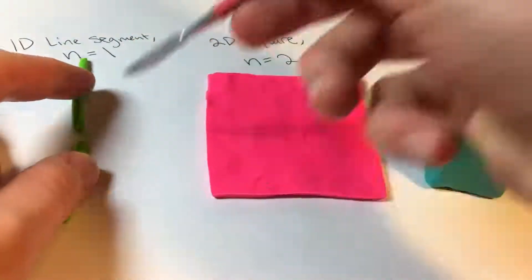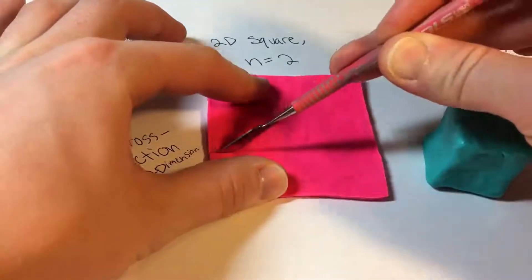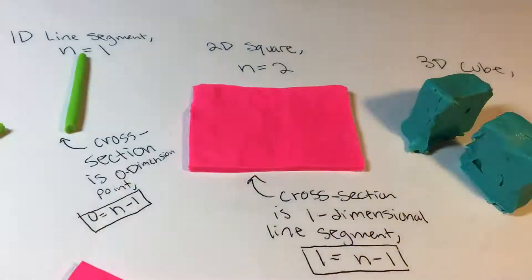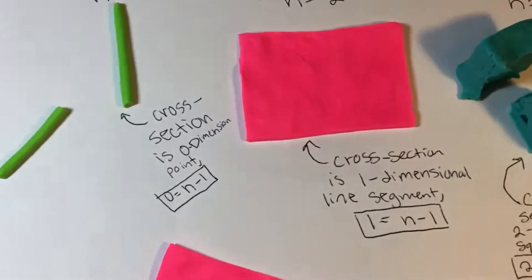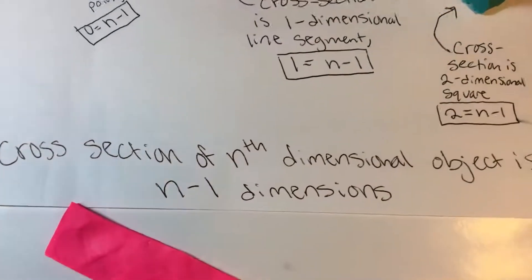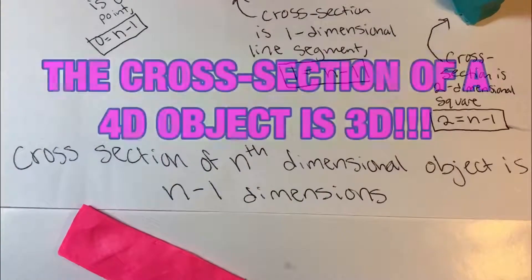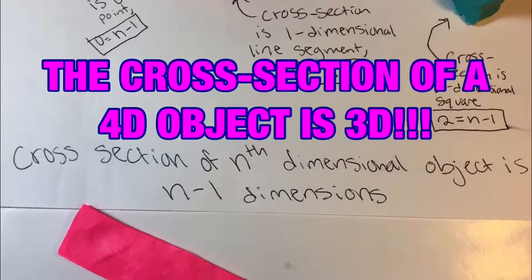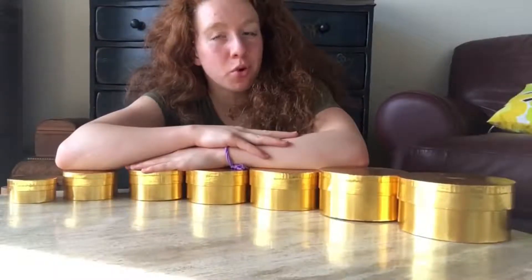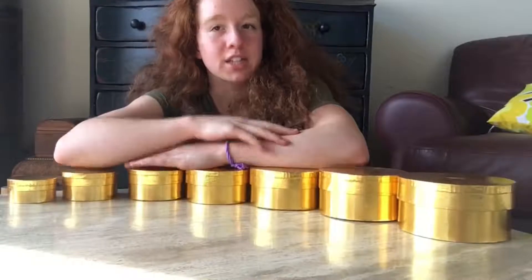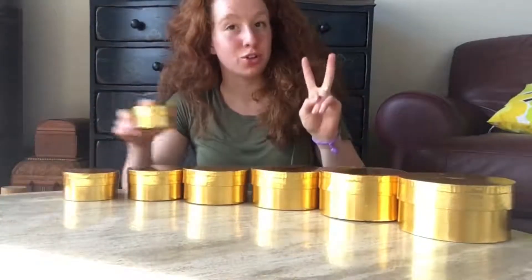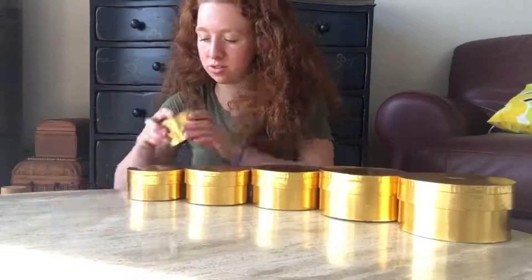If we were to slice any of these objects, we would see that the cross-section of an nth-dimensional object is n minus one dimensions. That means that the cross-section of a fourth-dimensional object is three-dimensional. You can think of a four-dimensional object as kind of like nested boxes, where each cross-section is three-dimensional.